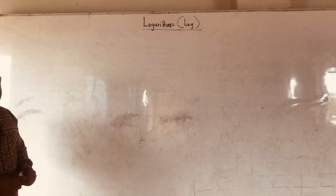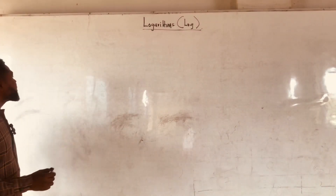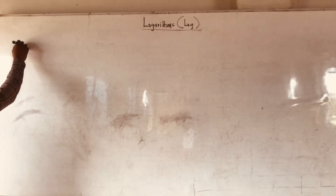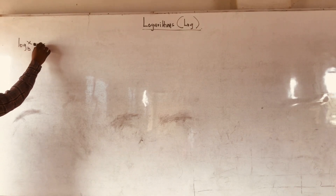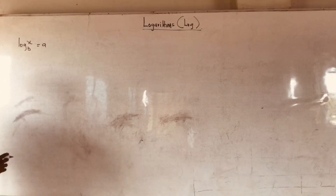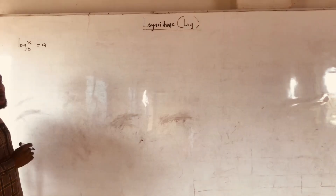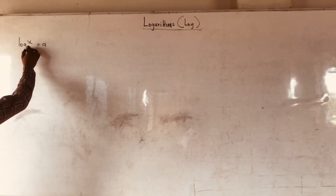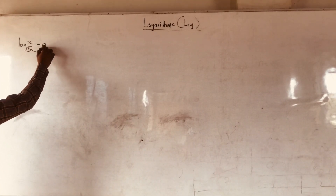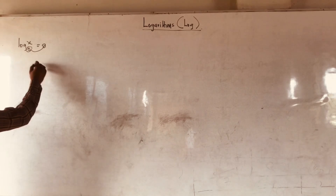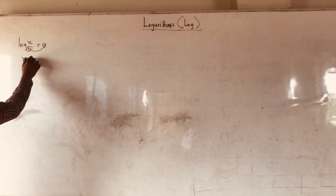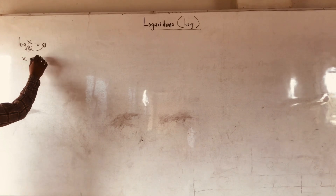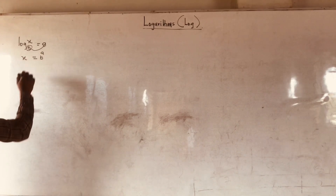Now let us look at the definition of log. By the definition of log, if I have log of x to base b equal to a, from the definition of log we can say that this base here will raise to the power a to produce the x. So we can say x equal to b raised to the power a.